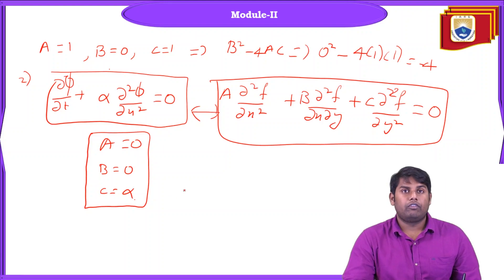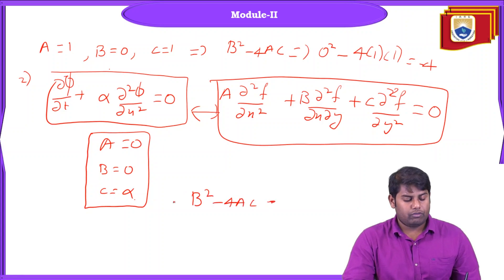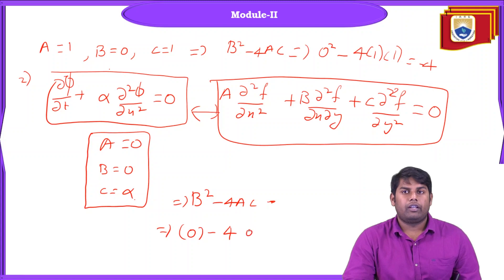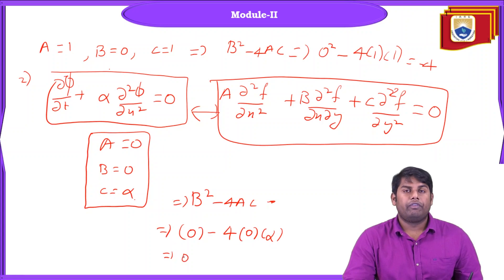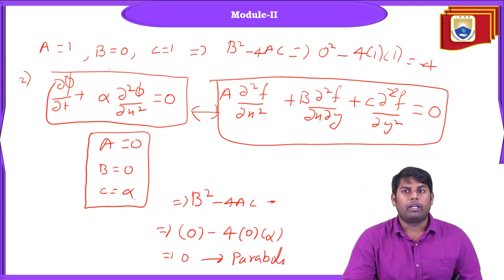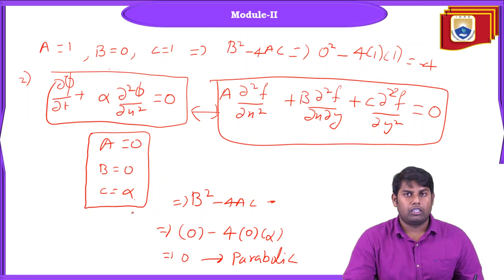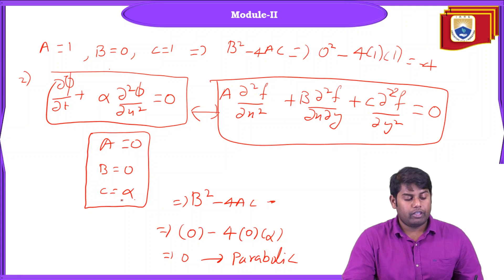Substituting into the discriminant formula B² − 4AC: 0² − 4·0·α = 0. The discriminant equals zero, so this equation is parabolic. The first equation, the Laplace equation, is elliptic, and the second equation, the diffusion equation, is parabolic.